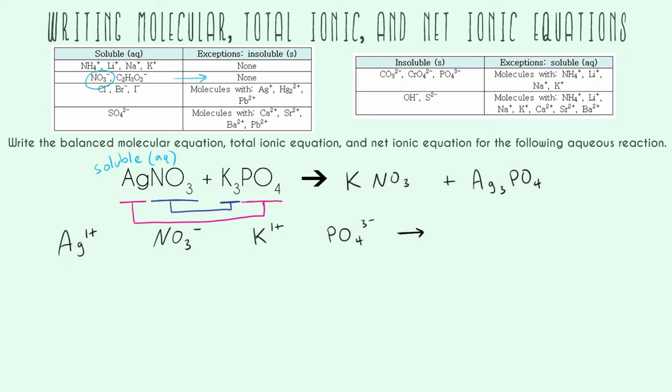Now looking at potassium phosphate, we find potassium is soluble, exceptions none. Anything with potassium is soluble, so this is also soluble and aqueous. This is great because this allows our reaction to actually happen. If these two things didn't dissolve in water, we couldn't react them in water.